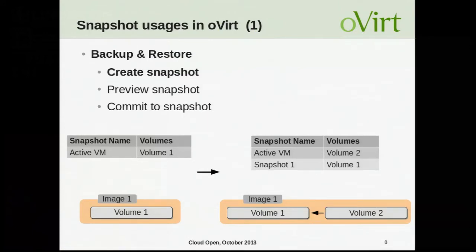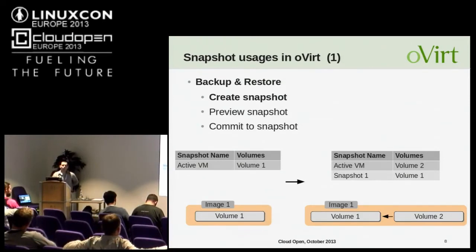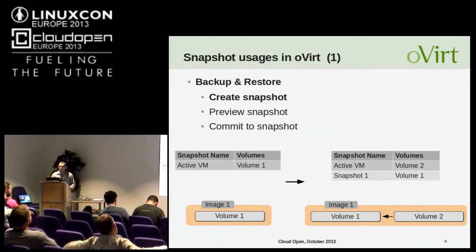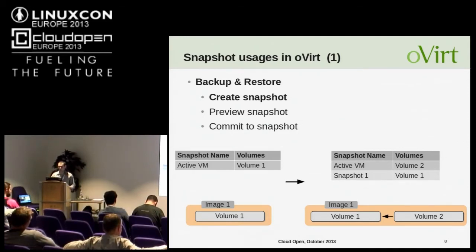When we create a snapshot, we add a new volume for the disk and set it as a child volume of the previously active volume. In our case, we add volume two as a child of volume one. The snapshot table is updated: the new volume will be associated with the active VM entry, and a new entry — say, snapshot one — will be added and associated with all volumes that were previously active. In our case, volume one, which contains the data of image one at the moment the snapshot was created.